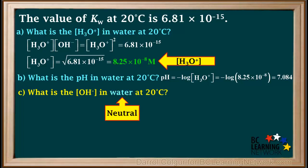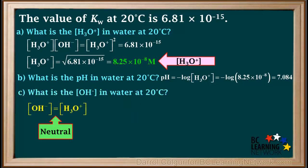However, because we're dealing with pure water, we know that it's neutral. Therefore, hydroxide ion concentration is equal to the hydronium ion concentration, which is 8.25 times 10 to the negative 8th molar.